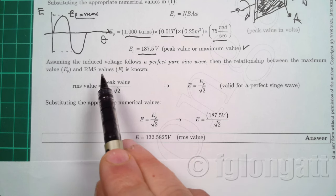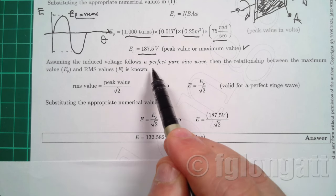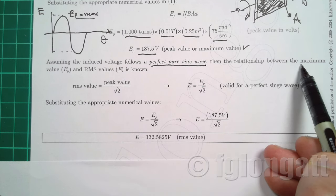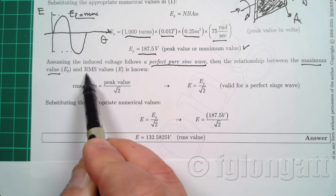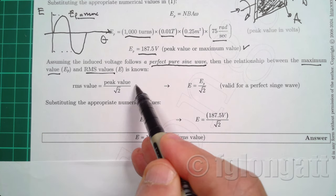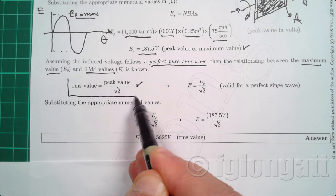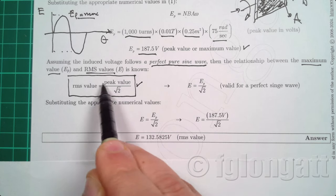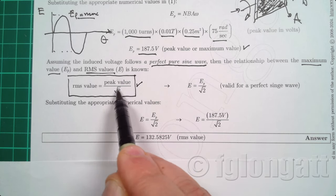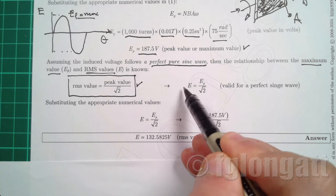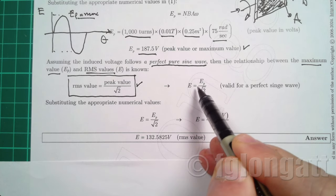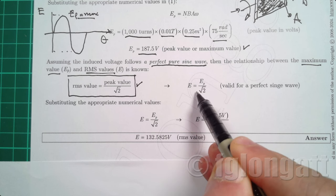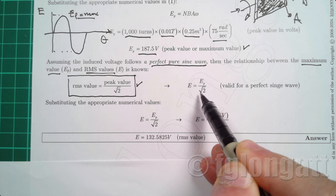So the other thing that my students must remember is from circuit theory, when we have a pure and perfect pure sine wave, there is a relationship between the maximum value and the RMS value. And that is this equation over here. The RMS value of a perfect pure sine wave is the peak value divided by square root 2. And in this very specific case that we are working here, we already know the peak value and what we need to do is divide by square root 2.